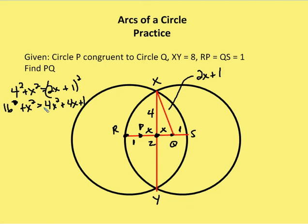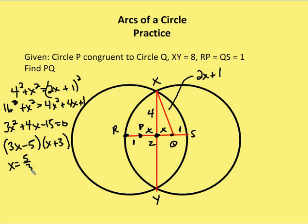I'm going to subtract X squared from both sides, subtract 16 from both sides, and I'm left with 3X squared plus 4X minus 15 is equal to 0 using my 0 product property. And then I can factor this into 3X minus 5 times X plus 3. And that leaves me where the result of X is equal to 5 thirds and X is equal to negative 3. Well, we know X can't be a negative value because X is a distance, so negative 3 is not going to work. X is equal to 5 thirds.